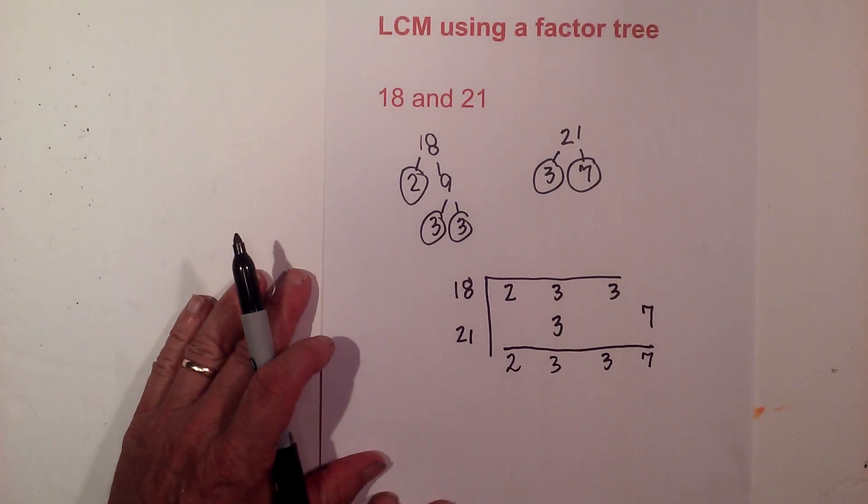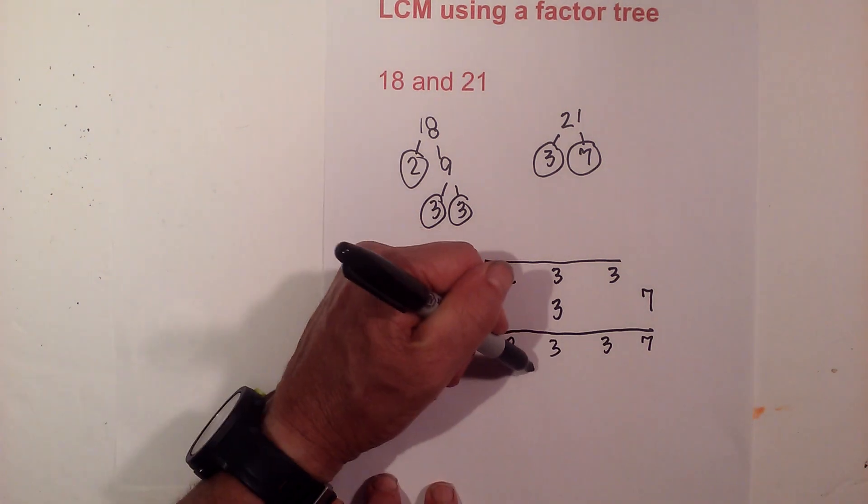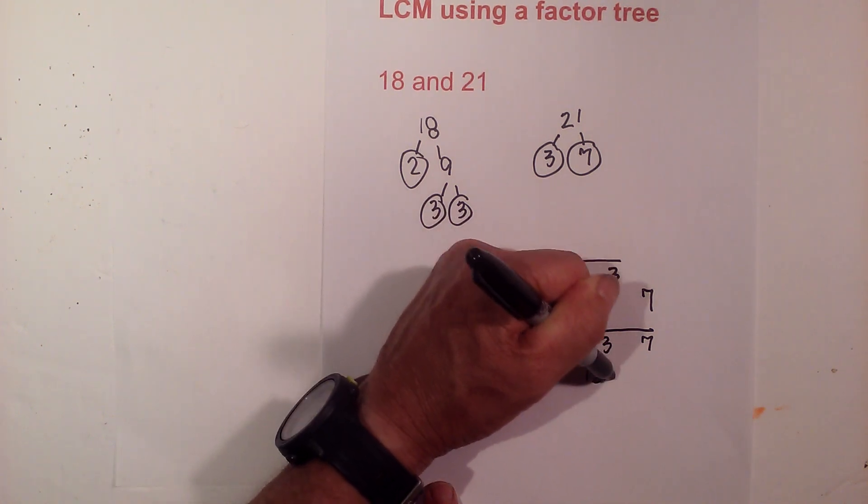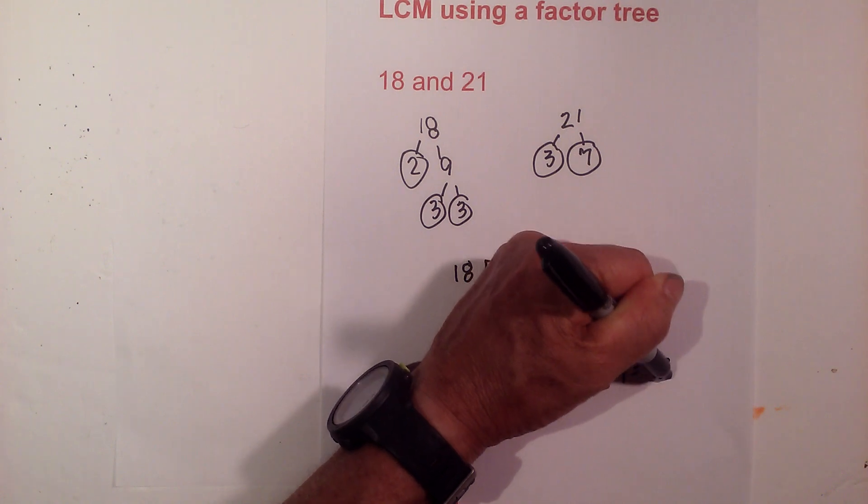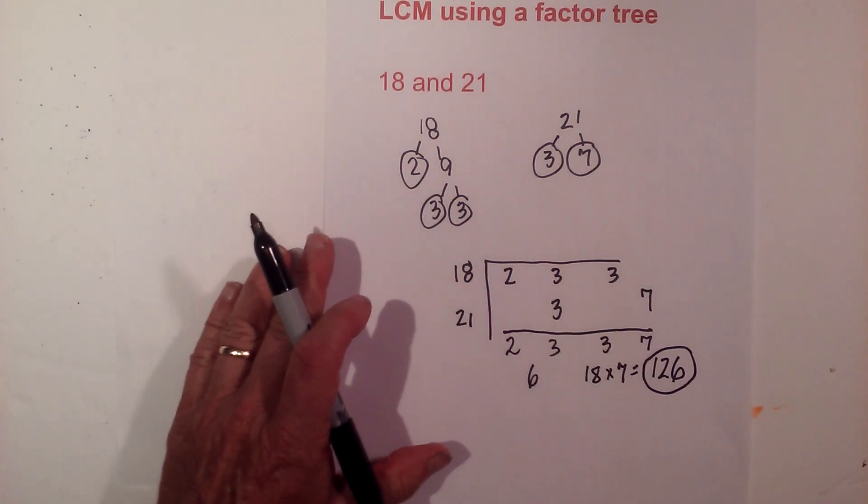Now all I do is multiply them together and I'm going to have the LCM. So 2 times 3 is 6, 6 times 3 is 18, and 18 times 7 equals 126. So the LCM of 18 and 21 is 126.